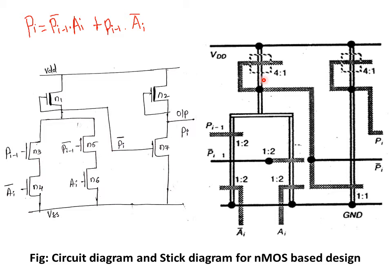Whenever you draw any stick diagram for a circuit, you need to follow a step-by-step process. The first step is to draw the VDD and VSS rails. The second step is to form the transistors first. Here we have 7 NMOS transistors total. In the stick diagram, N1 and N2 transistors are shown with a dotted square representing the implant, indicating these are depletion-type NMOS transistors.